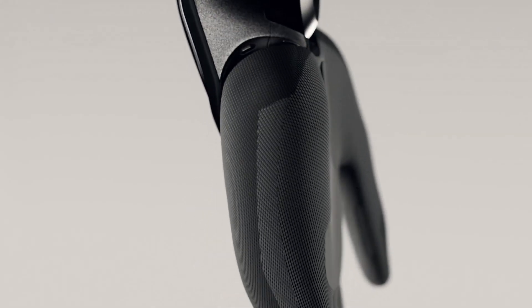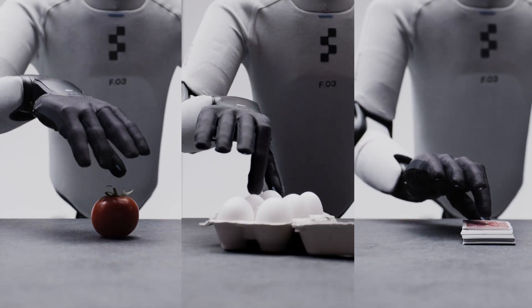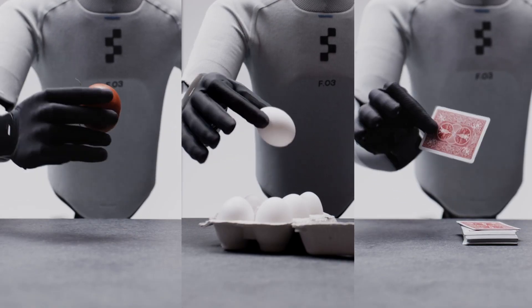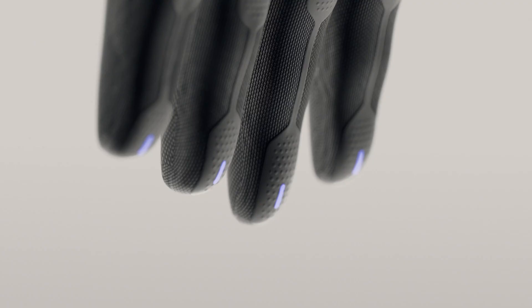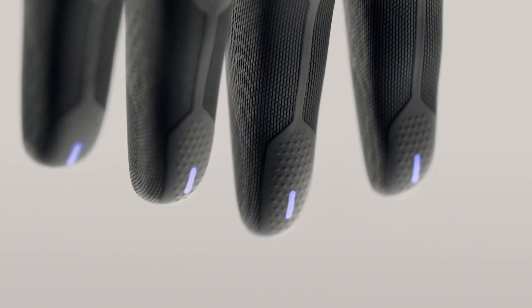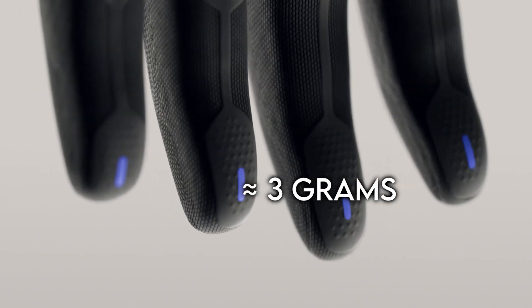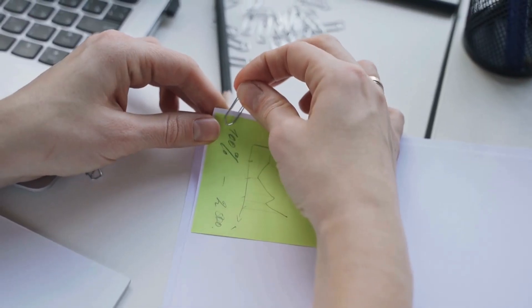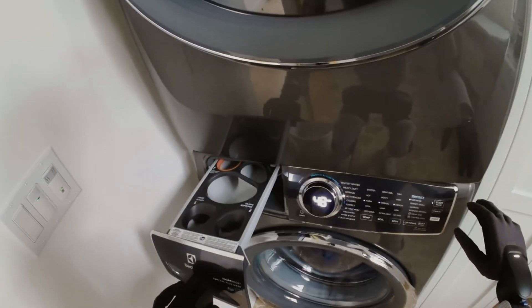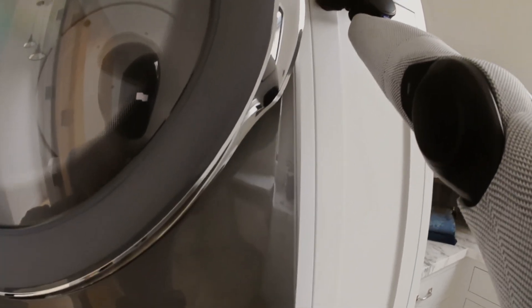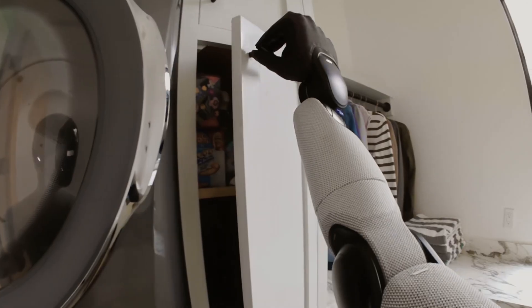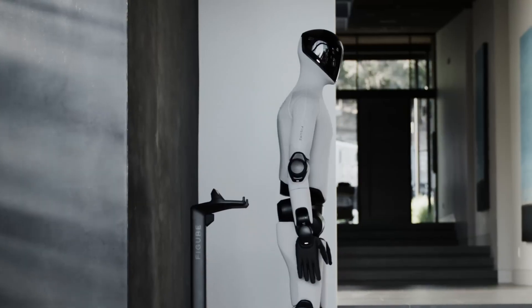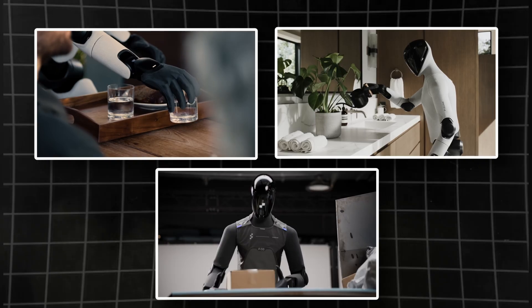Figure also went all-in on tactile engineering. After testing market sensors and realizing none could survive long-term stress, they built their own. Each fingertip sensor detects forces as small as three grams, literally light enough to feel a paper clip. That lets Helix distinguish between a solid grip and an impending slip before it happens. Combined with softer, more compliant fingertips that increase surface contact, Figure 0-3 can handle everything from glass to metal to flexible packaging without dropping or damaging it.